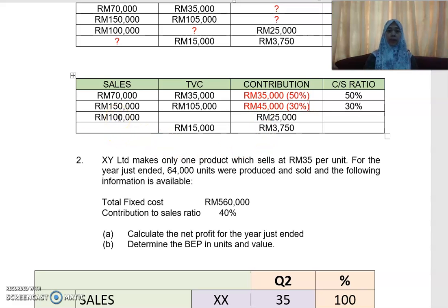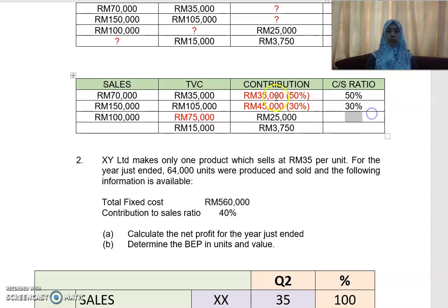For the next one, you are given total sales of RM100,000 and contribution of RM25,000. You can work out the total variable cost as the difference between sales and contribution, which is RM75,000. You can also work out the CS ratio: RM25,000 divided by RM100,000 gives you 25%.